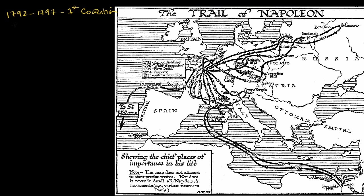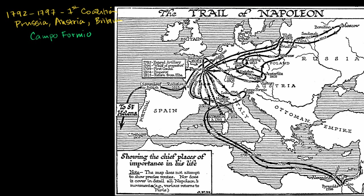The players in the First Coalition were Prussia, Austria, and Great Britain. This was essentially started by the French. King Louis XVI was alive then — he supported the war because he thought they would lose and maybe reinstate him, or that it would make him popular. The revolutionaries liked the war because they wanted to spread the revolution. It ended at the Treaty of Campo Formio in 1797, due mainly to Napoleon's victories in Italy.